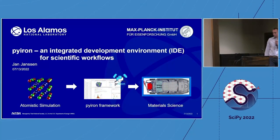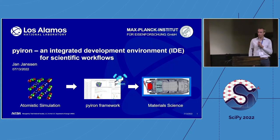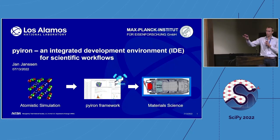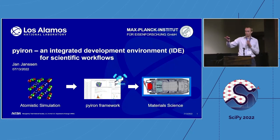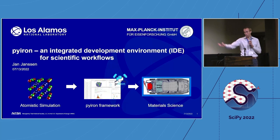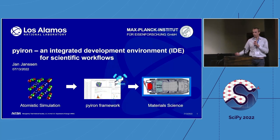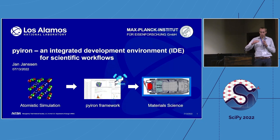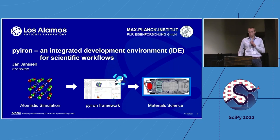I want to talk about Pyron. The goal is really to go from atomistic structures to full material properties — or as illustrated here, ideally finally the full car. We really want to go starting from the full theory level and then compare to experiment at the very end.